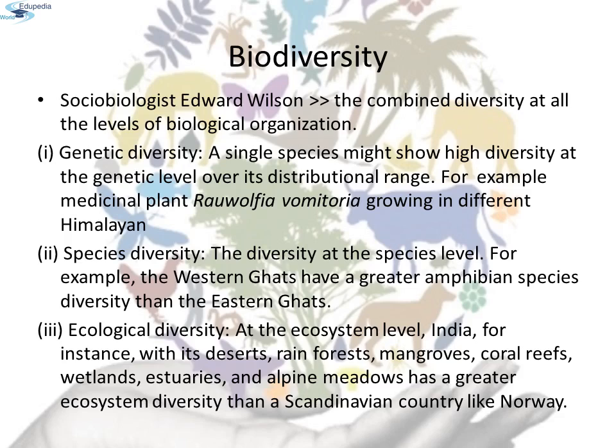The second level is species diversity — the diversity at the species level. For example, the Western Ghats have a greater amphibian species diversity than the Eastern Ghats. The third is ecological diversity at the ecosystem level.